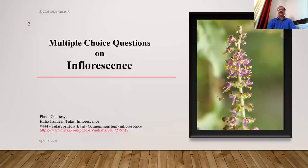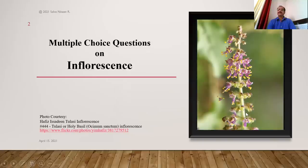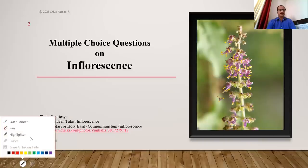Multiple choice questions on inflorescence. As you can see in this picture, this is inflorescence — a specialized branch on which flowers are being produced in groups. This group of flowers, this cluster of flowers on a specialized branch, is called inflorescence. This branch has a central axis.